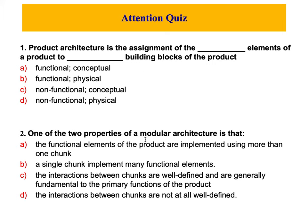For the second question: one of the two properties of modular architecture is that the interactions between chunks are well-defined and are generally fundamental to the primary function of the product. I hope this clarifies and defines both modular and integral architecture. Thank you for watching — see you in the next video.